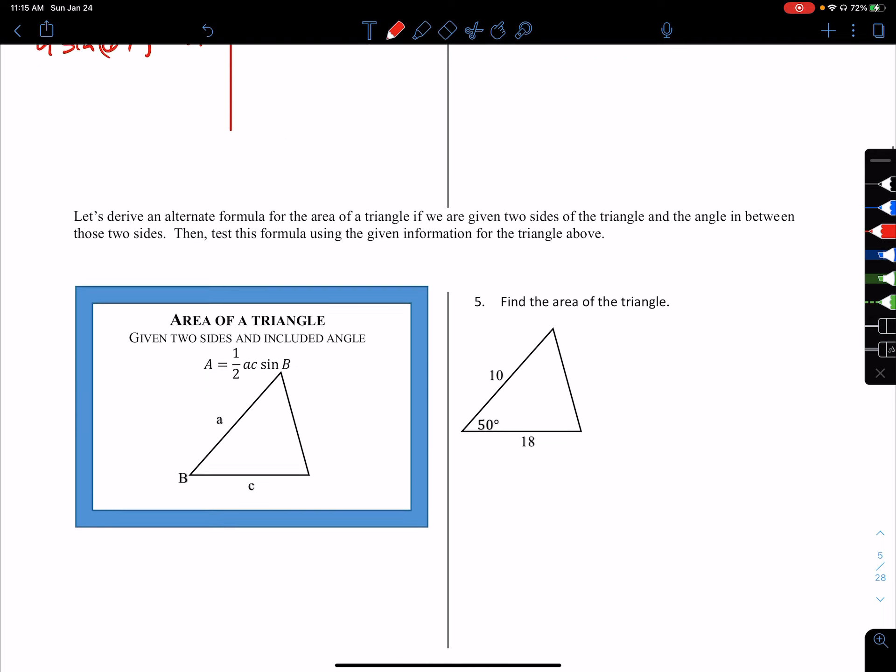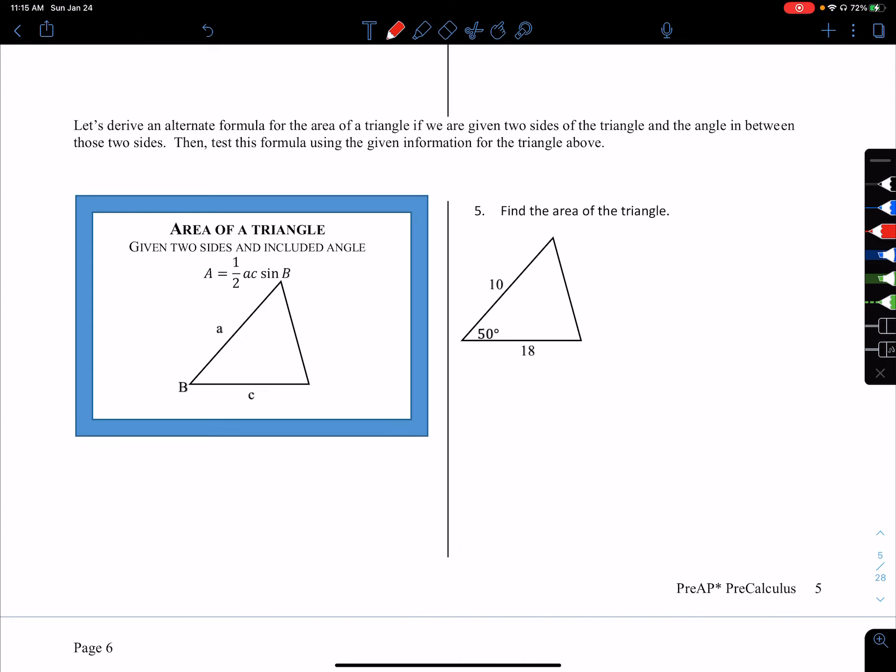That leads us to this formula. The area of a triangle, when we don't know the height, is one-half times a times b times sine of C. Here, a times sine of B gives the height using right-angle trig, and C is the base. Long story short, if you're given two sides and an included angle of a triangle, you can find the area by taking one-half, multiplying the two lengths together, and multiplying that by sine of the angle included between them.